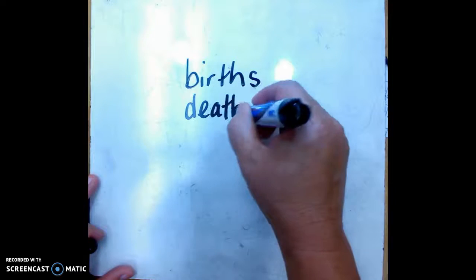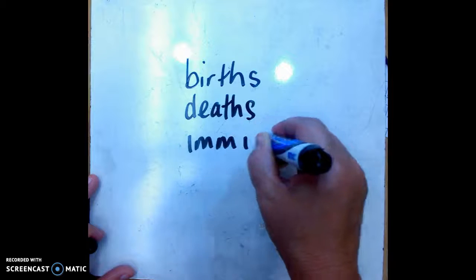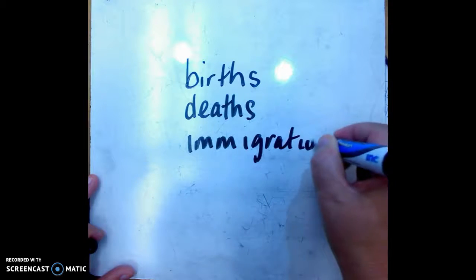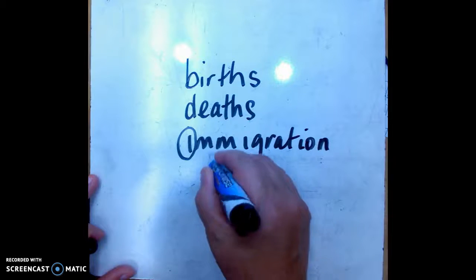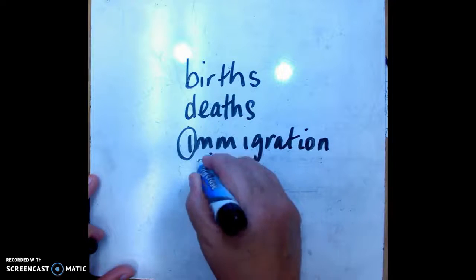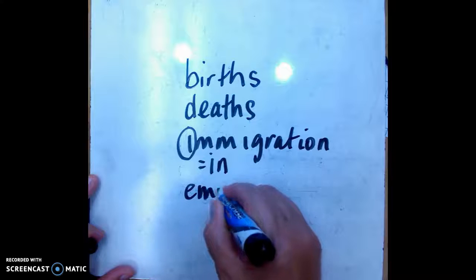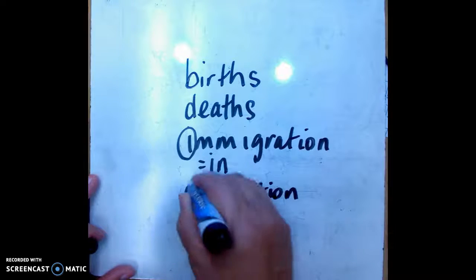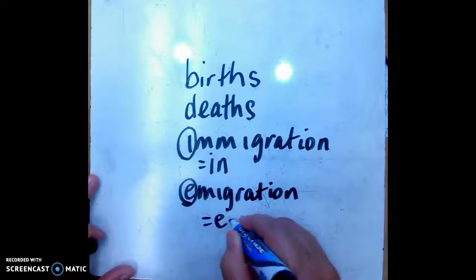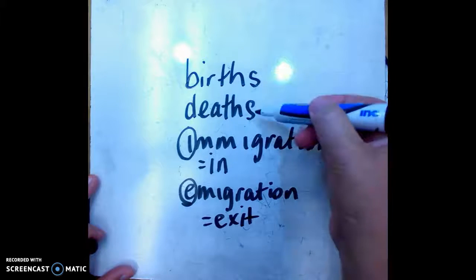And then we also have immigration and emigration. Immigration is when you move into an area, and the 'I' in immigration helps you remember that that's in. Emigration is when you leave a population, so 'E' is exit, leave.